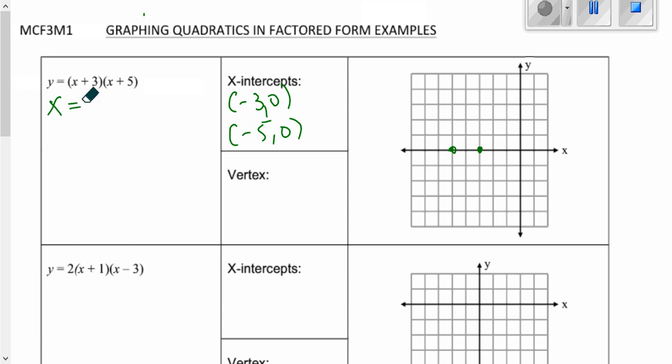I'm going to say x is equal to and I'm going to add together negative 3 and negative 5 and then I'm going to divide by 2. That will give me the average of those two values. Negative 3 plus negative 5 is negative 8 divided by 2 is negative 4, just like we predicted. So we know the x-coordinate of the vertex is going to be negative 4.